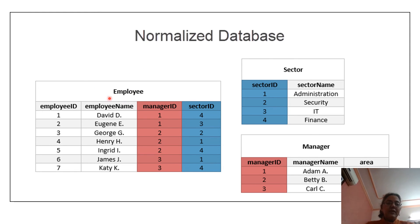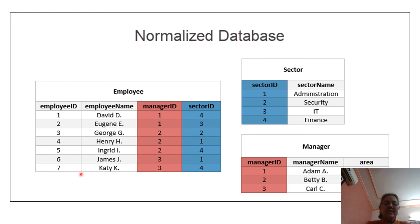For example, with employee data, we have employee ID, name, manager ID, and sector ID. We can create a separate table for all sectors and another for managers. If any change occurs in a sector or manager, we only need to change that sub-table, not the main data table. This is how sub-tables are created that can be easily modified, reducing redundancy.